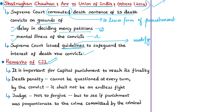The Chief Justice of India stated that it was important for capital punishment to reach its finality — the death penalty cannot be questioned at every turn by the convict. The CJI also spoke about the role of judges: it is not for a judge to forgive a crime. The cardinal duty of a judge is to see if the punishment is proportionate to the crime committed. Therefore, it is not the judge who deals with a criminal — it is the law that deals with a criminal.